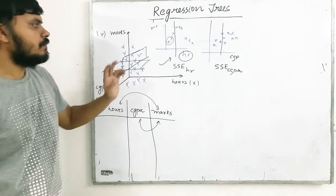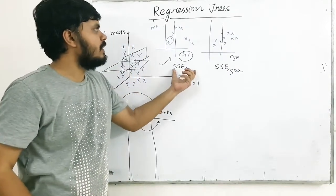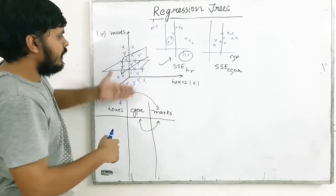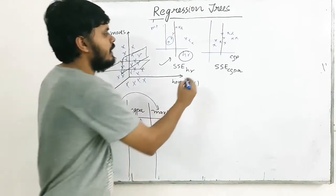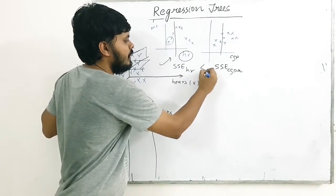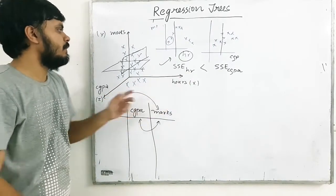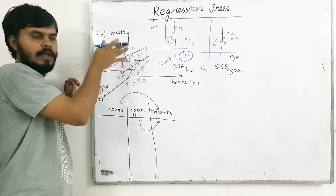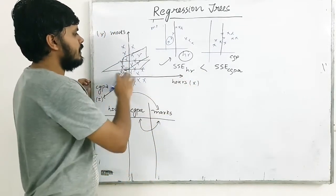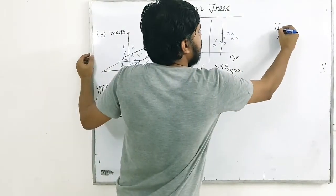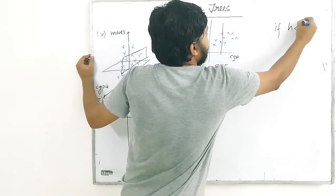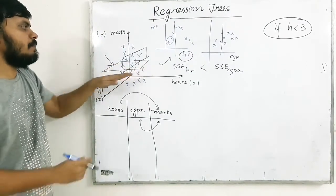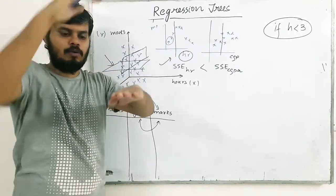Then for this overall 3D data, the first split will go along whichever axis has the smaller SSE. If hours SSE is smaller, you cut with a plane parallel to the CGPA axis. If CGPA SSE is smaller, you cut with a plane parallel to the hours axis. So the first split decision is: which gives us the minimum sum of squared error?